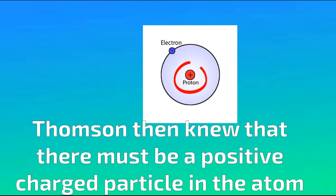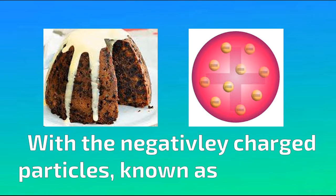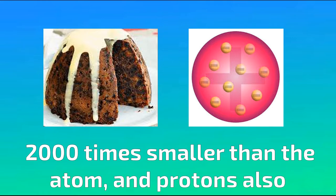Thompson then knew that there must be a positively charged particle in the atom. He gave us the plum pudding model, with the negatively charged particles, known as electrons, 2,000 times smaller than the atom, and protons, also in the atom, arranged evenly.